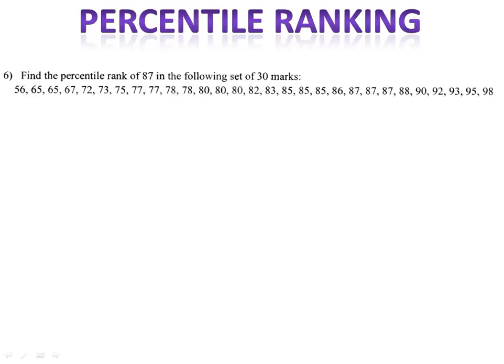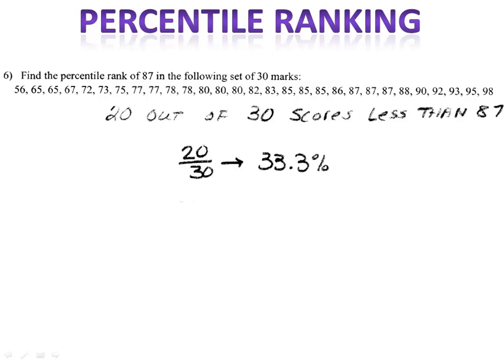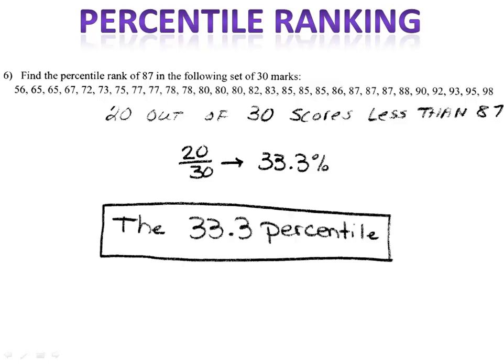In example 6, can you calculate the percentile rank of the score at 87? Please pause the video here. 20 out of the 30 scores are less than 87. That gives us 20 out of 30, or 33.3%. So you are roughly in the 33rd percentile — you did better than 33% of all students who took this test.